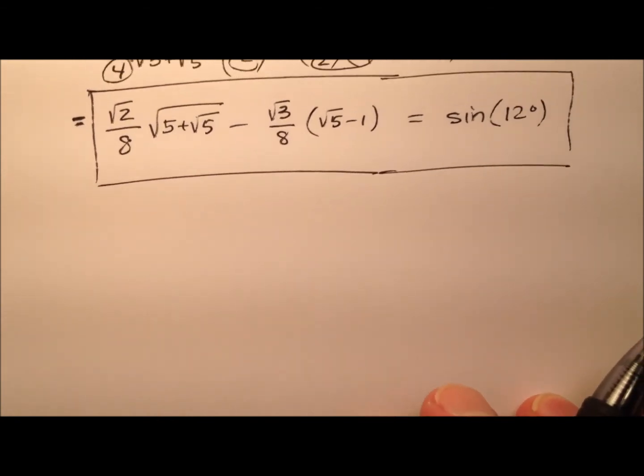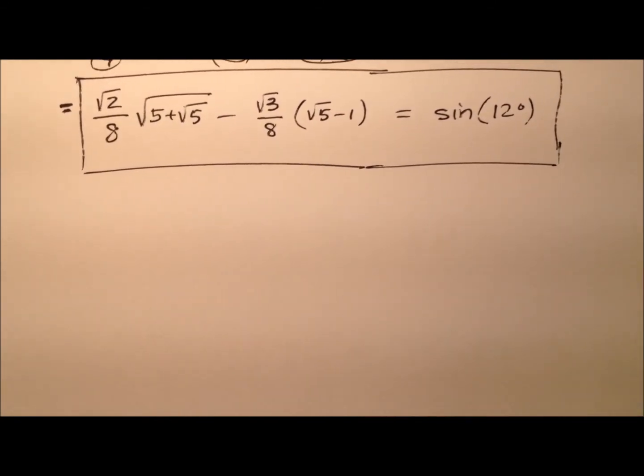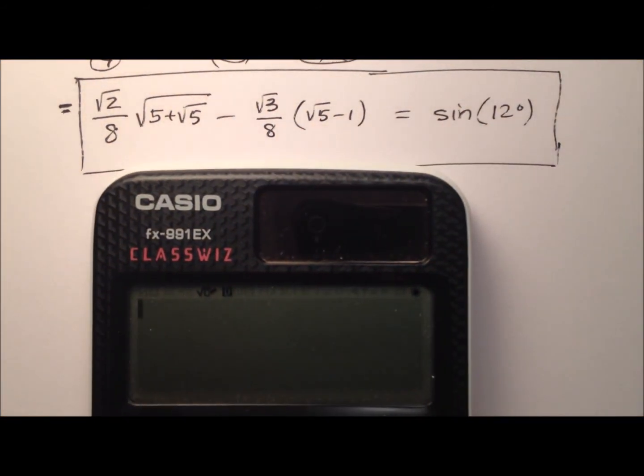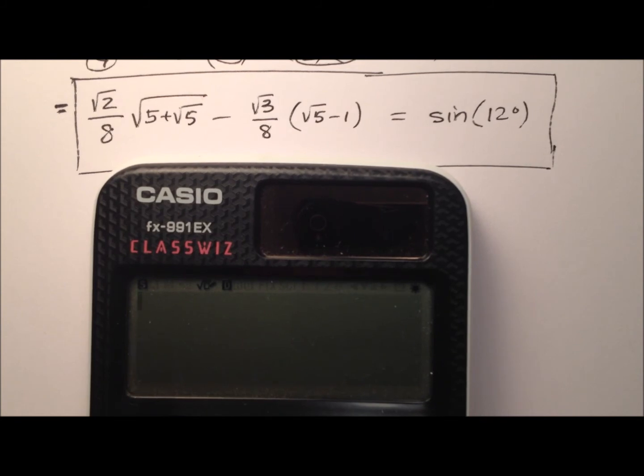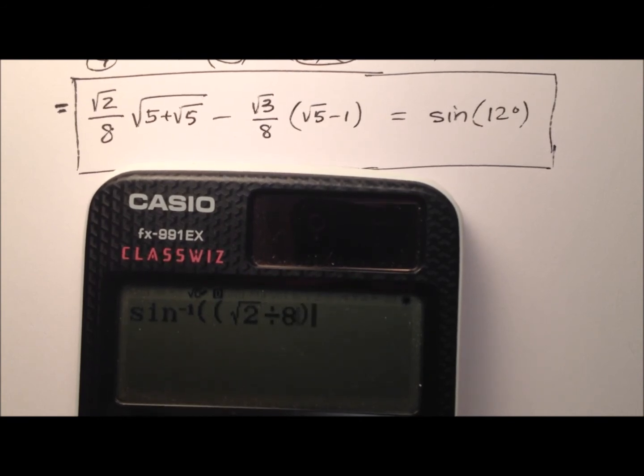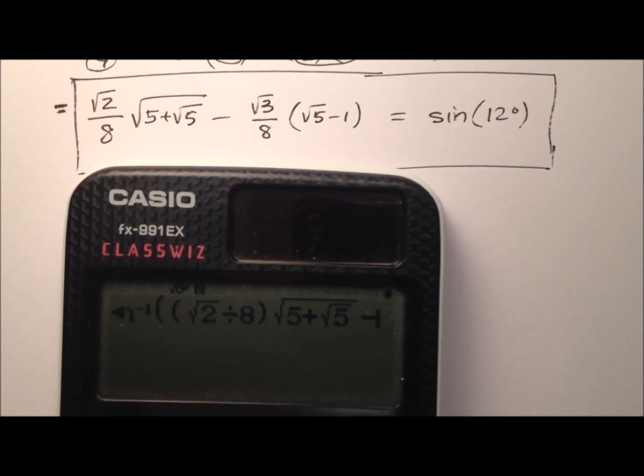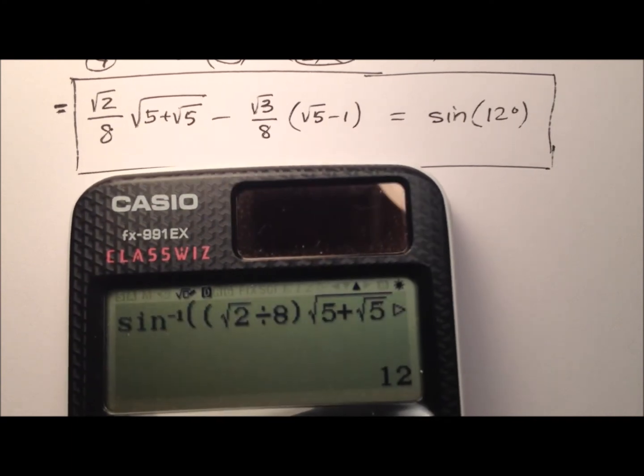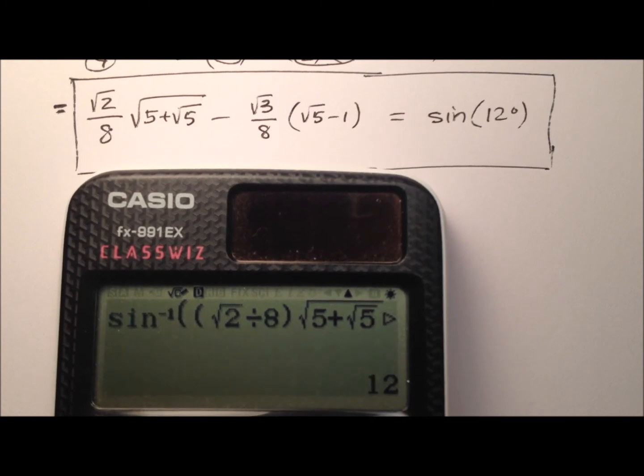Let's go ahead and grab a calculator and plug it in and see if it works. We'll do the inverse sine, so second sine, and we'll plug this entire expression in there. We'll start with the square root of 2, divide that by 8, close that up and multiply it by the square root of 5 plus the square root of 5. From that we will subtract the square root of 3 divided by 8, and we'll multiply that by the square root of 5 minus 1, and close all that up. And 12 degrees, yep! We see that works out for the sine of 12 degrees.